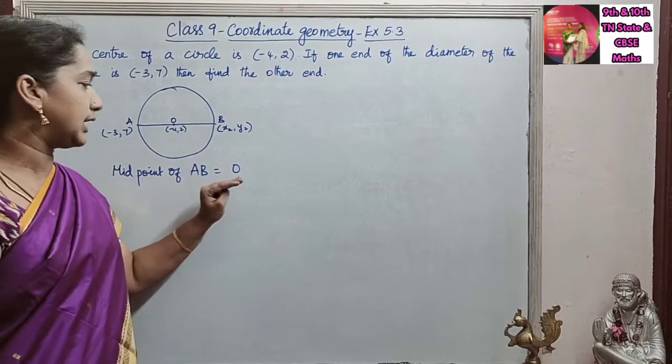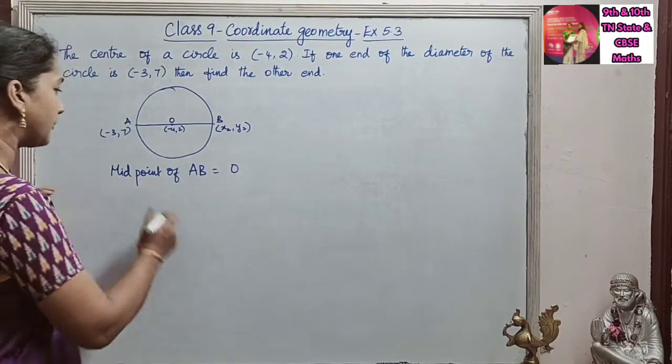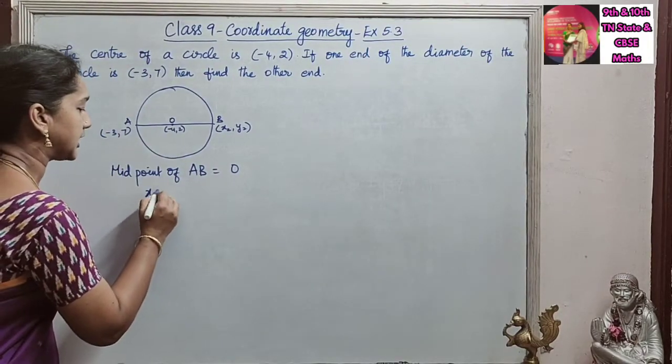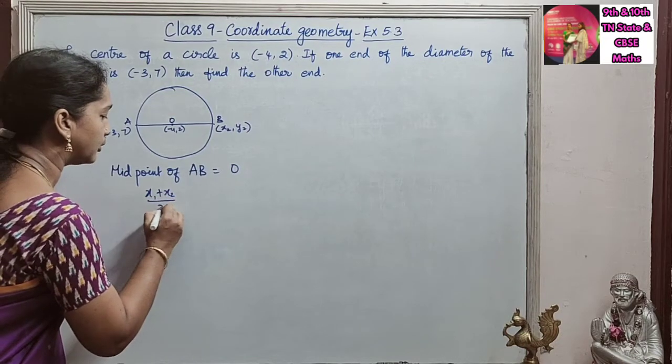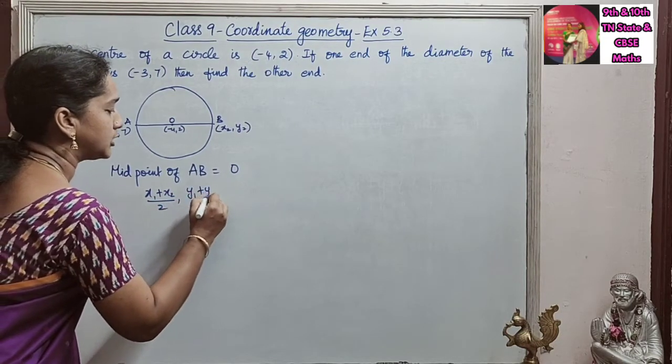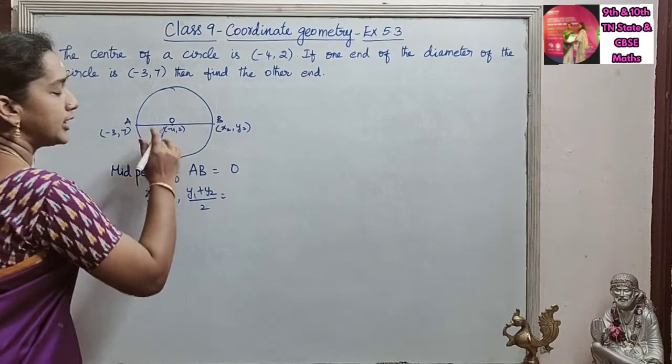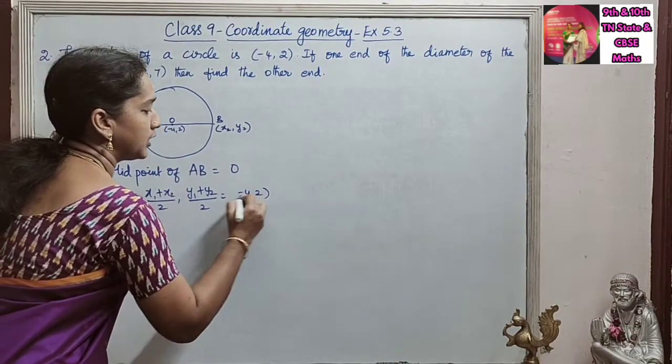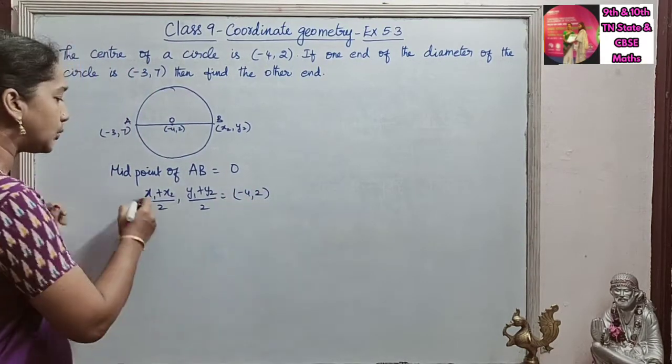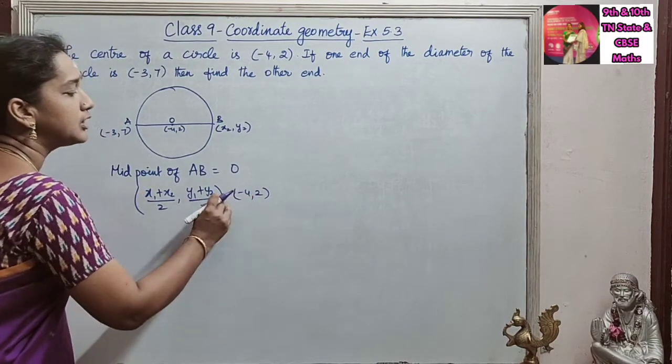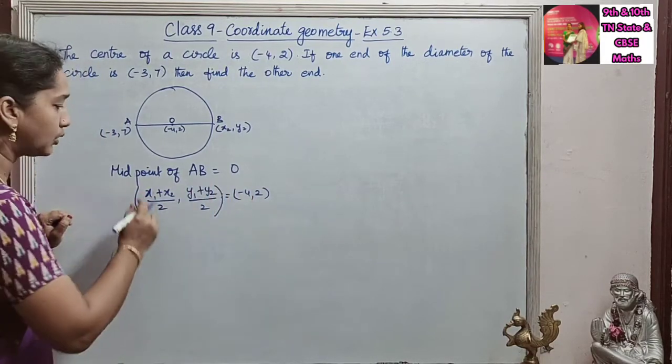So midpoint formula is (X1 + X2)/2, (Y1 + Y2)/2. O is (-4,2). The point for O is (-4,2). So now we are going to equate this to (-4,2).